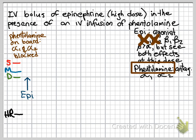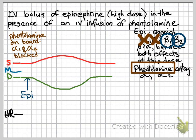We're going to administer epinephrine at the blue arrow, and we'll see the effect of epinephrine on the beta-2 receptors. This is going to cause the expected decrease in diastolic pressure due to vasodilation. We'll also see the effect of epinephrine on the beta-1 receptors, and this will cause the increase in systolic pressure due to stimulation of heart rate and contractility, leading to an increase in cardiac output.